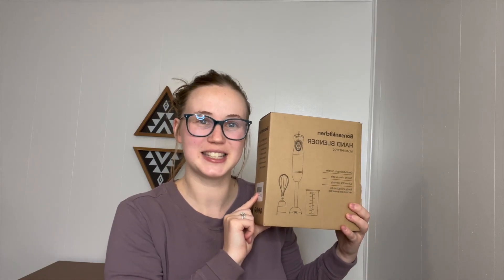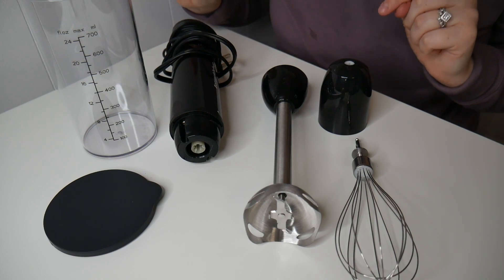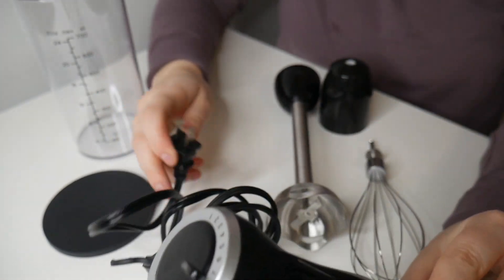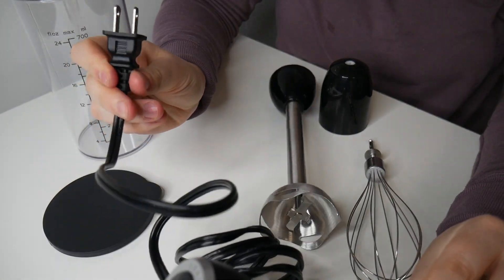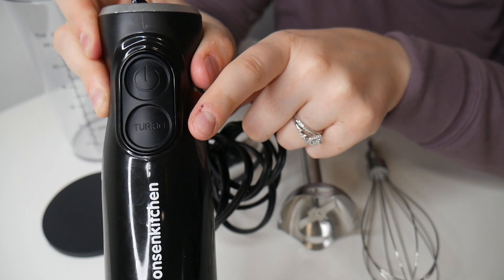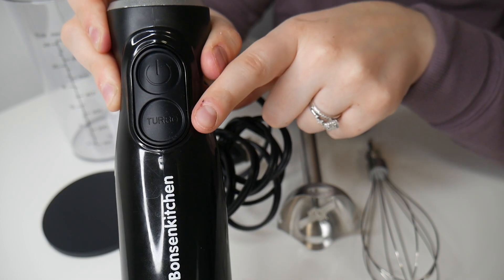Right here I have this hand immersion blender. Let's go ahead and give you a closer look. Here's everything that came inside the package besides the user manual. We have the immersion blender itself, which is power operated with a normal outlet. It has a power on/off button as well as a turbo button which can give a quick burst of power to help blend ice or ingredients really fast.